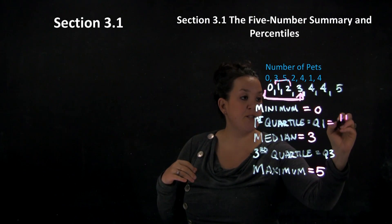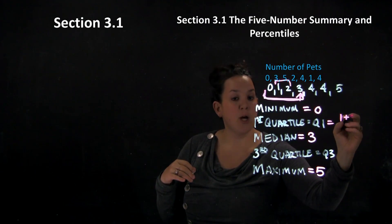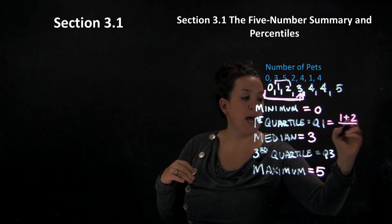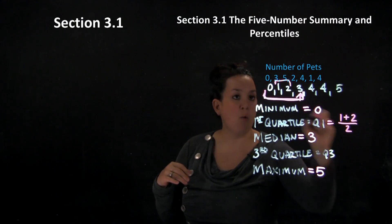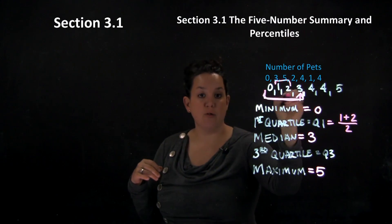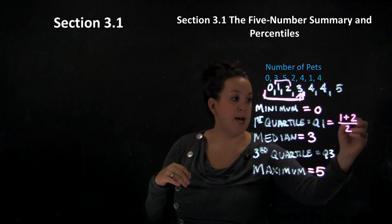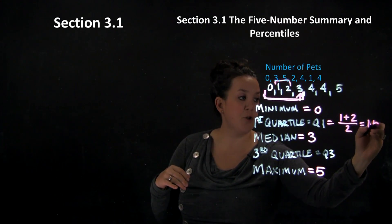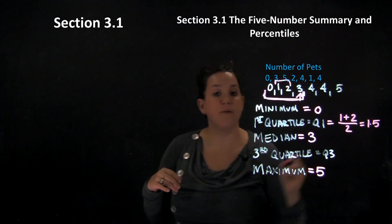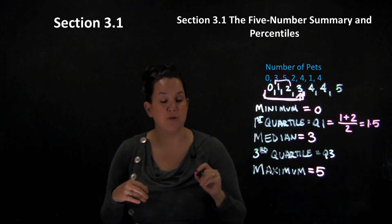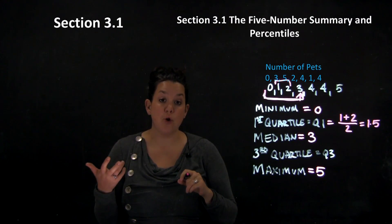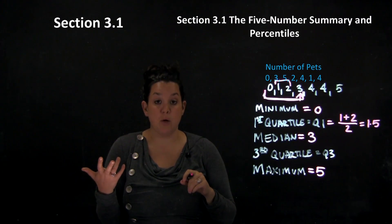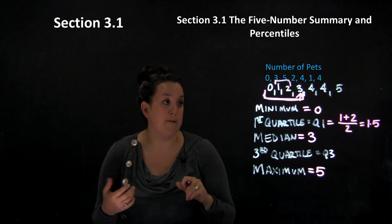To find Q1, we are going to add one and two — those middle two observations — and divide by two. Essentially, we're finding an average of those middle two observations. So Q1 for this data set is going to be 1.5.